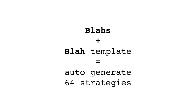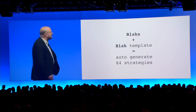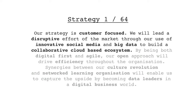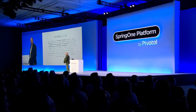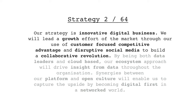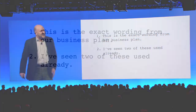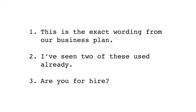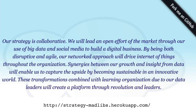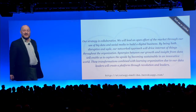Then I combined the BLAS and the BLAS template and generated 64 random gibberish strategies. Things like this: 'Our strategy is customer focus. We will lead a disruptive effort of the market through our use of innovative social media and big data to build a collaborative cloud-based ecosystem.' I sent this around — about 400 responses, three basic types. One: 'This is the exact wording from our business plan.' Number two: 'I've seen two of these used already.' And my favourite: 'Oh, you've a hire.' So a friend of mine has put this all online — strategy as a service. It's just random gibberish. If you ever need a strategy, just type in the URL. It automatically creates you one based on nothing. If you don't like it, just press refresh.